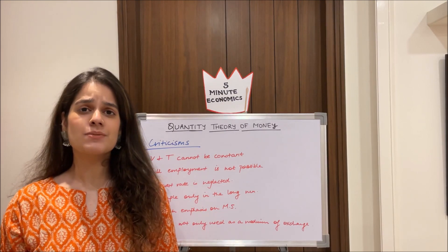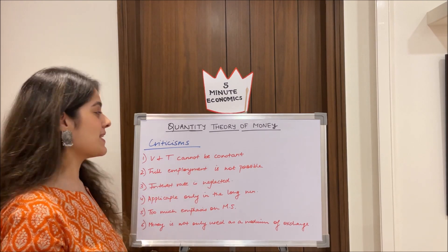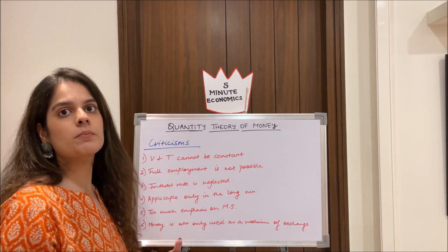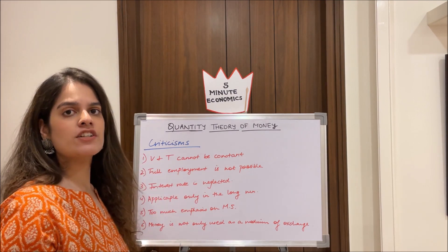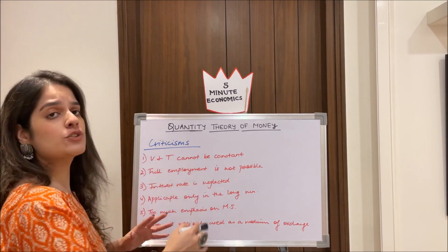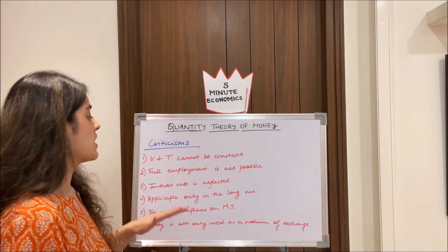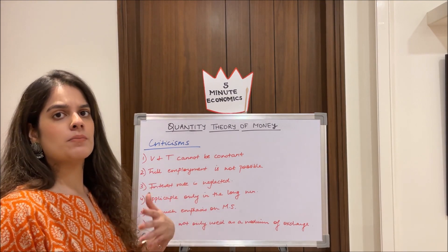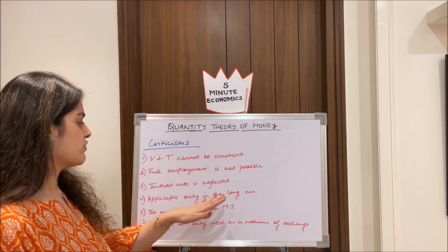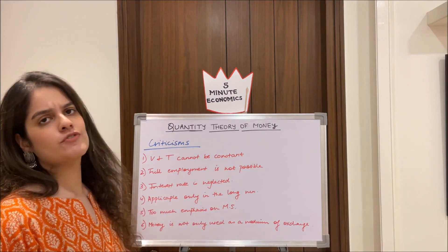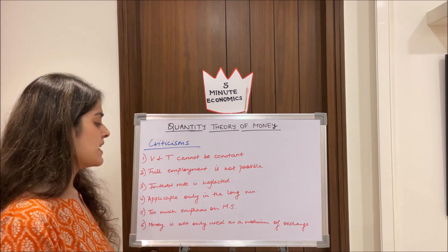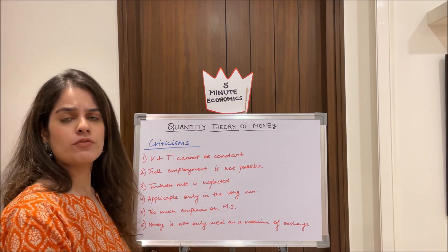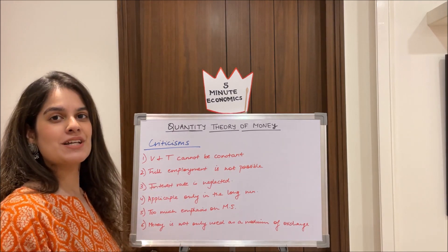In conclusion, the criticisms of this theory largely stem from its assumptions. Keynesian economists criticized that V and T cannot be constant — when population increases, velocity tends to increase; when natural resources or technology develop, T changes. Full employment is a very rare phenomenon. Interest rates have been neglected, even though they are relevant to money supply and prices. The theory applies only to the long run, places too much emphasis on money supply, and ignores other functions of money like store of value and speculative demand.